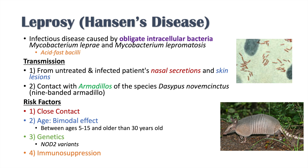The fourth risk factor is immunosuppression. If you're immunocompromised, you're at higher risk of contracting any kind of illness. Patients on chemotherapy and patients who are HIV positive, or any other immune suppression, are going to have an increased risk for leprosy as well.